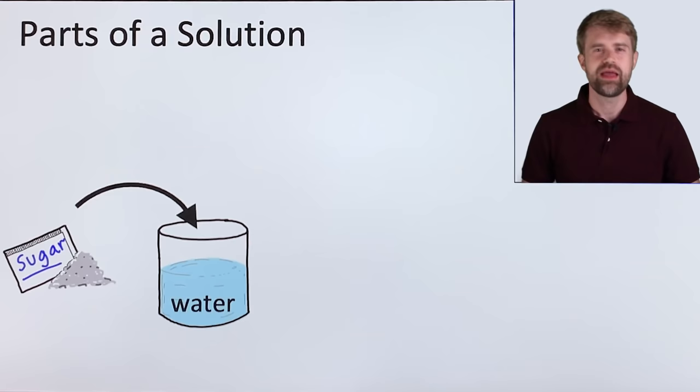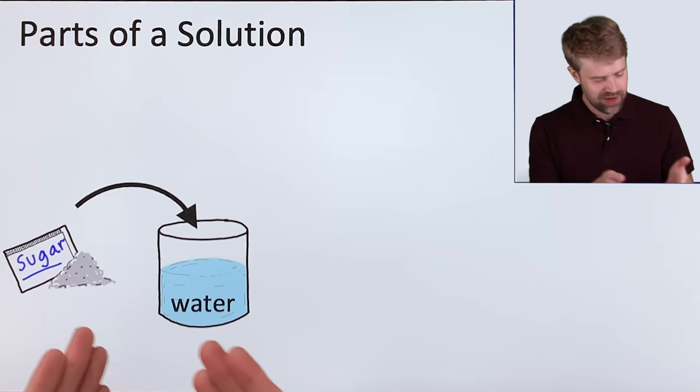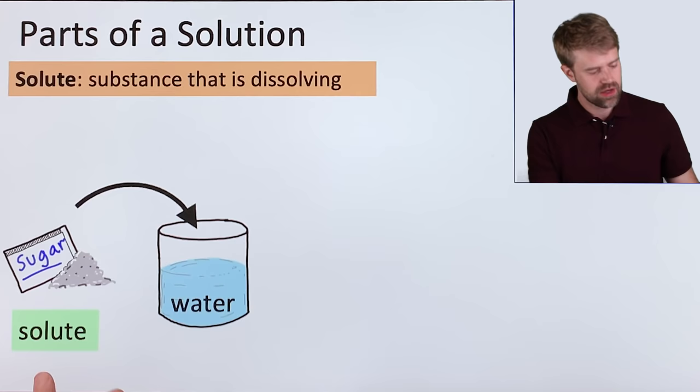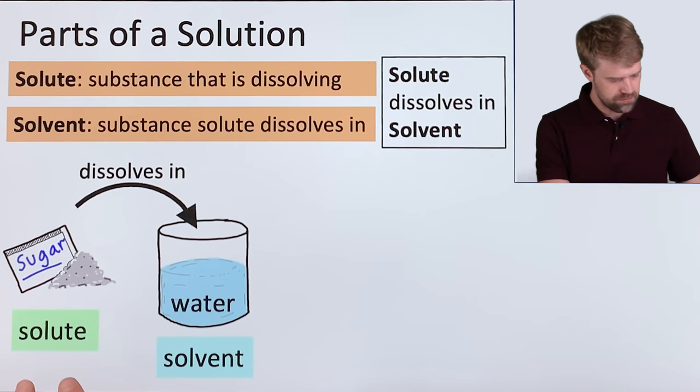Let's start getting into the details of solutions. First off, the parts. Every solution has two parts. Let's say we're dissolving sugar in water. The substance we're dissolving, we call that the solute. Here that's the sugar. And the substance the solute is dissolving in, we call that the solvent. So the solvent would be water here. So in other words, the solute dissolves in the solvent.